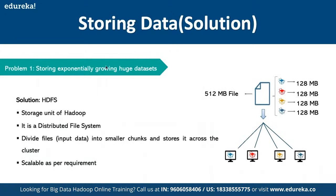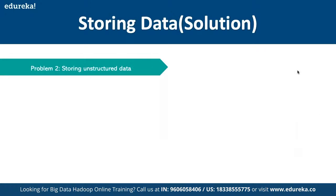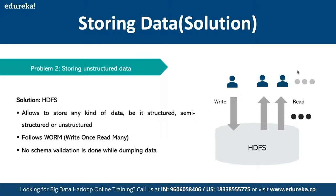The solution to storing exponentially growing data is HDFS — the storage unit of Hadoop. It is a distributed file system where files are divided into smaller chunks and stored across different clusters. For example, a 500 MB file is divided into smaller packages stored in different nodes for faster processing. HDFS also solves the unstructured data problem because it can store any kind of data — structured, semi-structured, or unstructured — following a write-once, read-many principle with no schema validation required when dumping data.